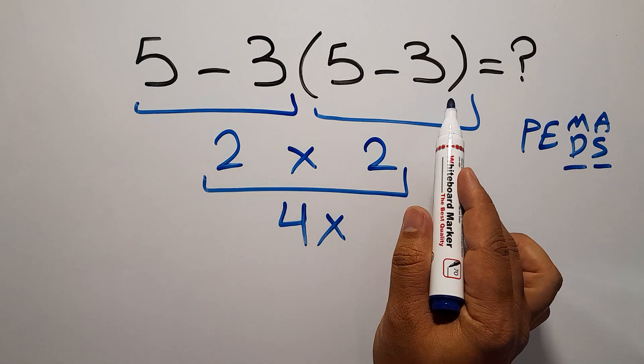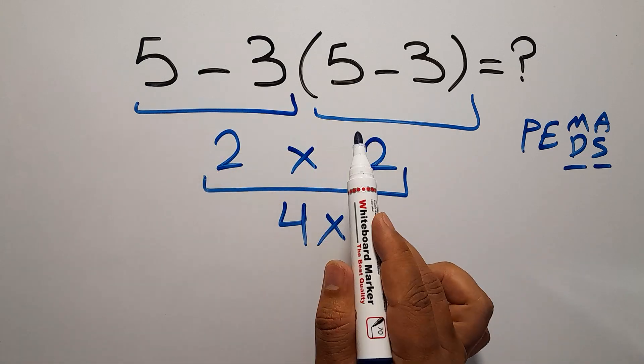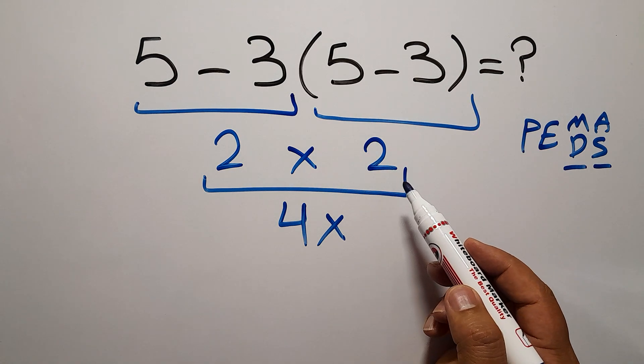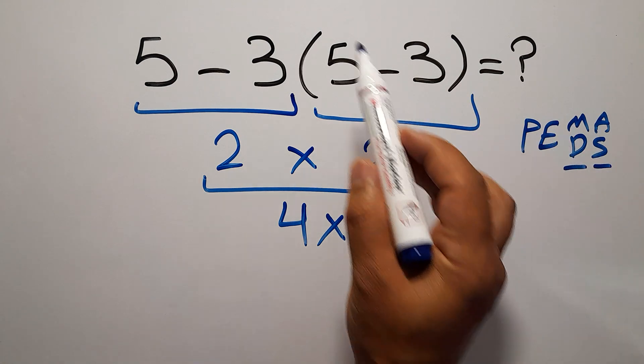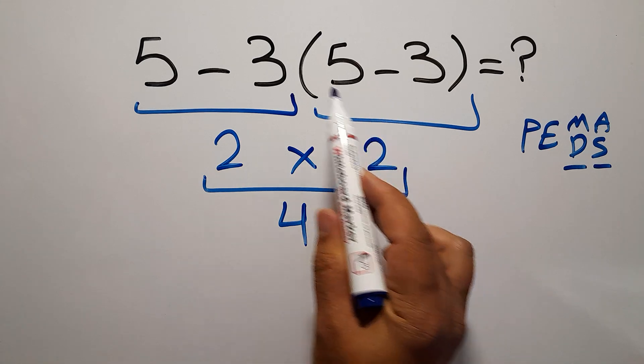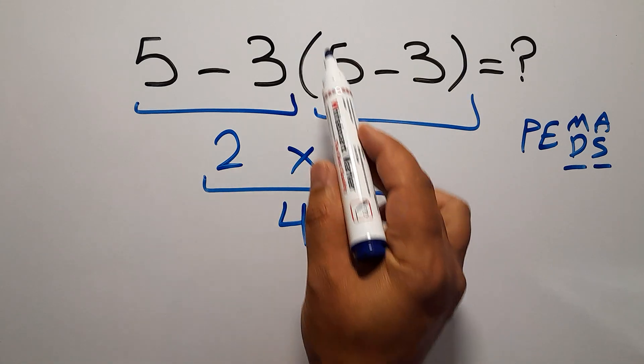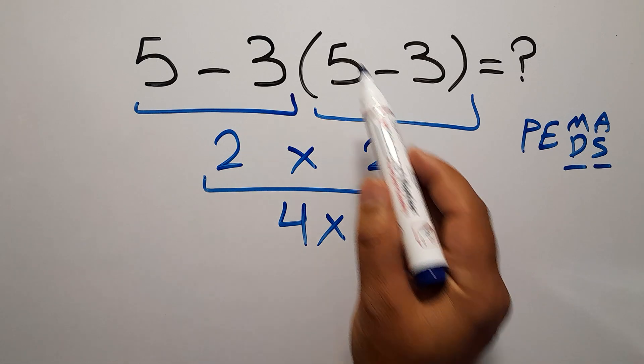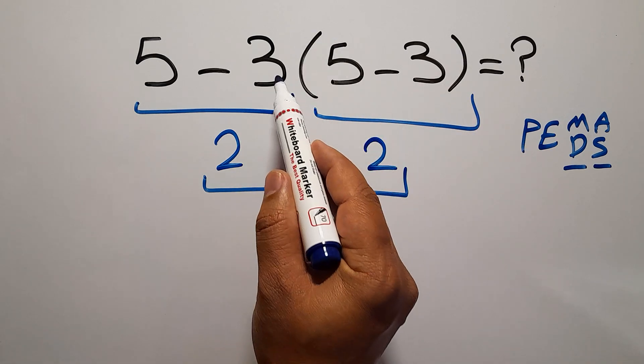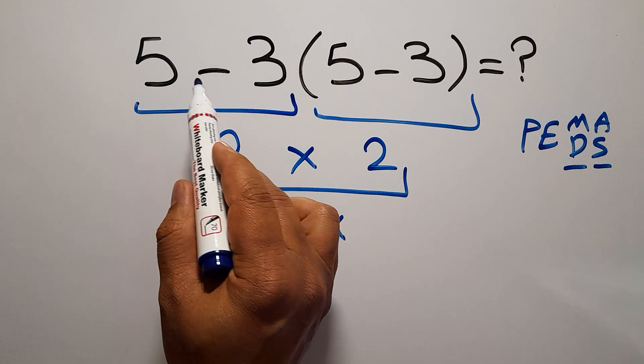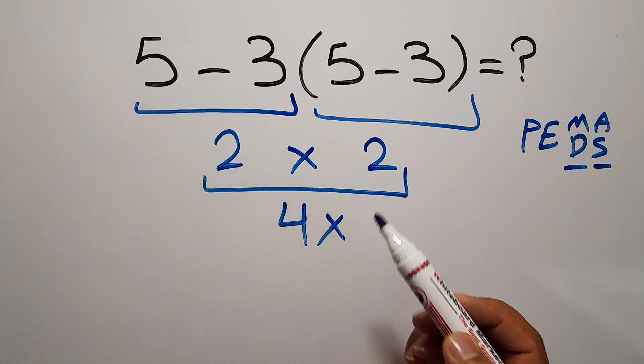In this expression we have 1 subtraction, 1 multiplication and 1 parentheses. In PEMDAS parentheses has a higher priority than other operations. So first we have to do this parentheses. After this parentheses we have to do this multiplication and finally we have to do this subtraction.